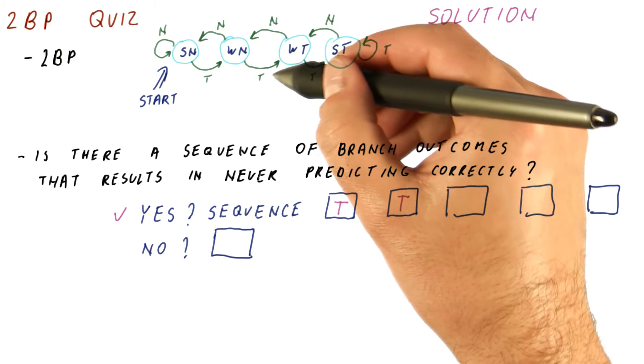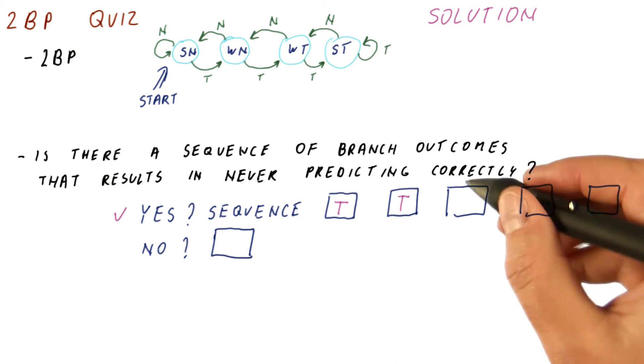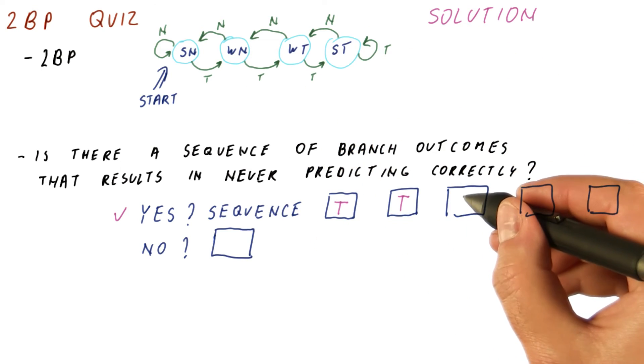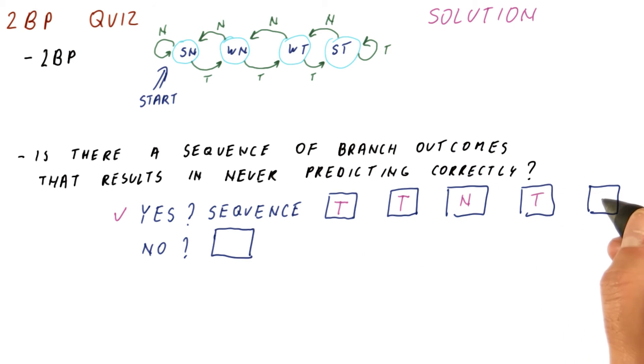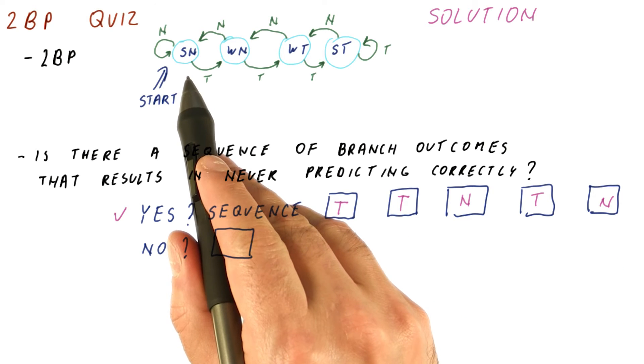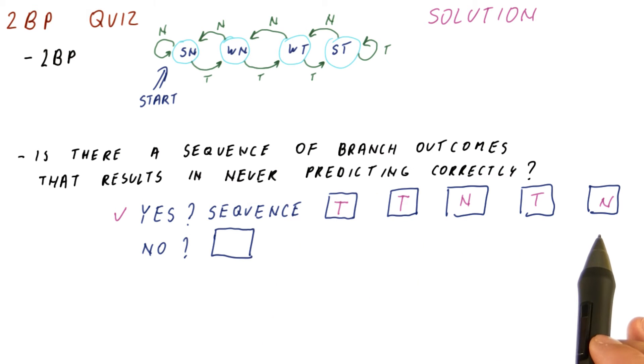Now the predictor goes to the weak taken state, and now we know how to cause the alternation between these states. So in the weak taken state, we go not taken. It moves to weak not taken. Now we say taken, and so on. So you can just keep doing this. Pretty much even if we do start in a strong taken state, there is a way to move us to a weak state at which point we can do this alternation.